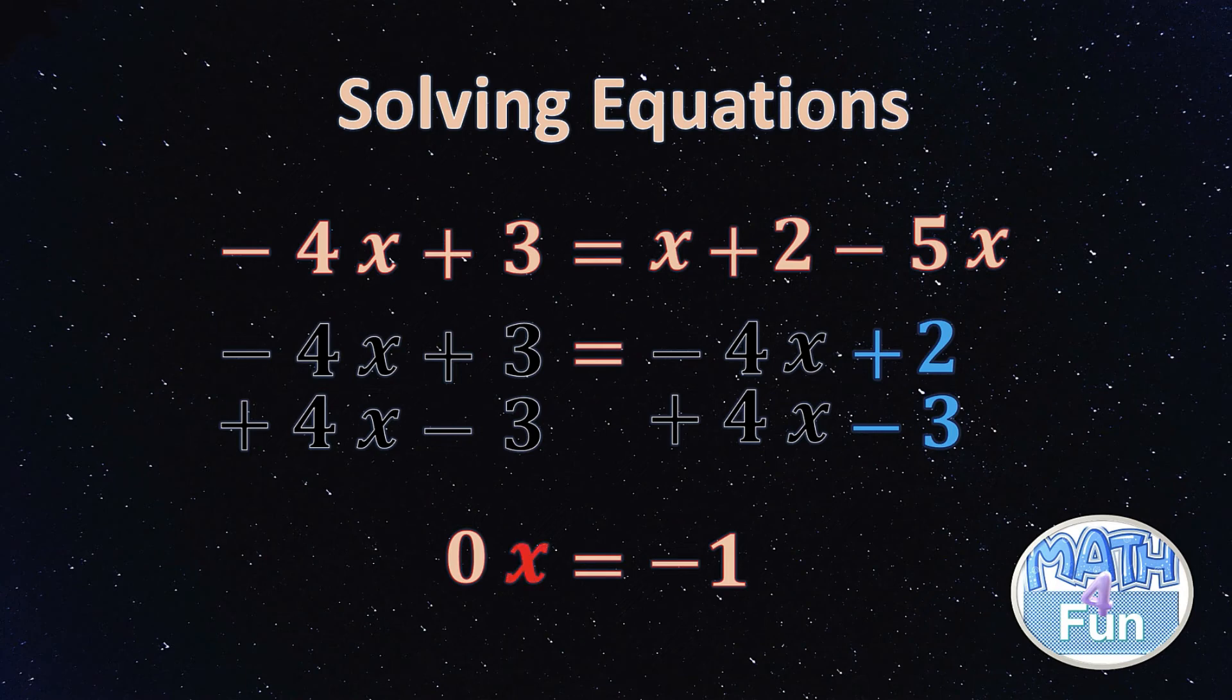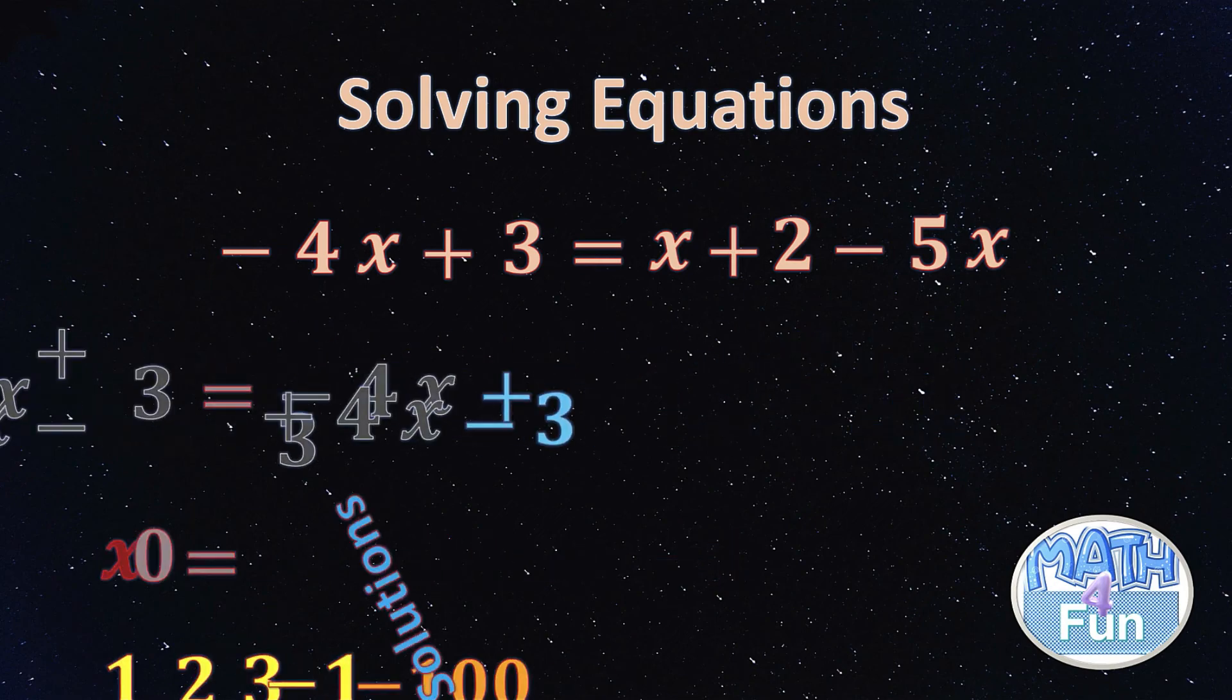Replace x with any number and multiply it by 0, you'll be getting 0, not -1. So in this case, 0 times 1 is 0, 0 times 5 is 0, it's not -1. So what do we say in this case? We say no solution.